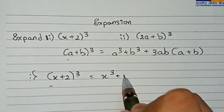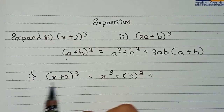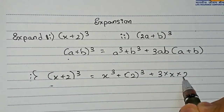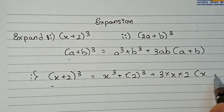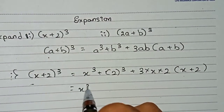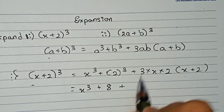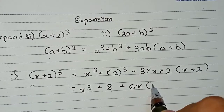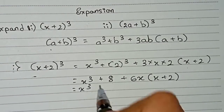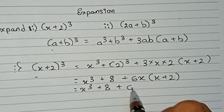Then 2 cube, plus 3 into x into 2, then a plus b which is x plus 2. So it becomes: x cube, plus 2 to the power 3 which is 8, plus 3 into x into 2 into x plus 2. Expanding further, 6x into x gives 6x squared.